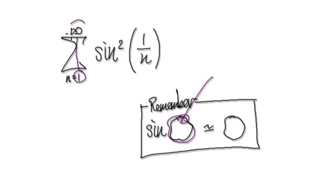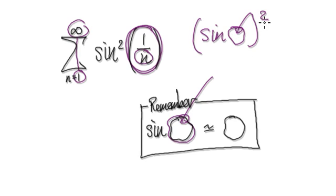As n tends to infinity, as n gets bigger and bigger, this whole thing here will get smaller and smaller. So you have sine of something that's getting smaller and smaller. Don't forget, you've got it squared.